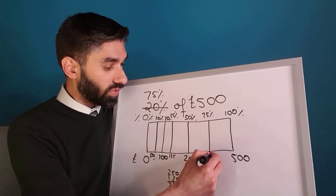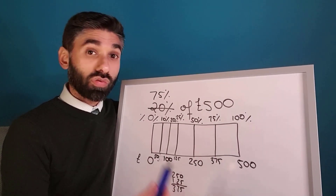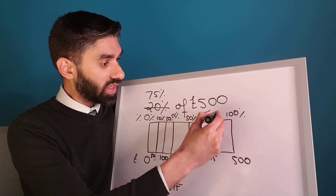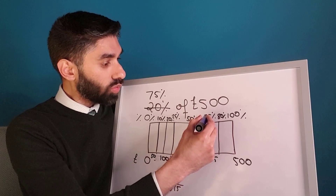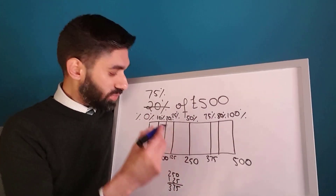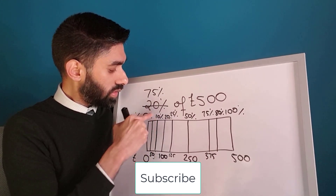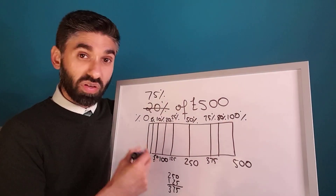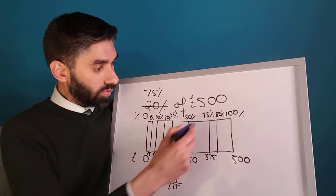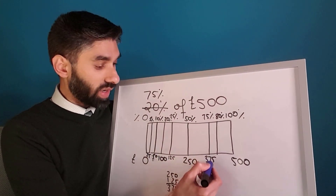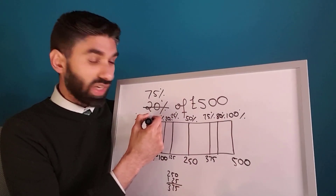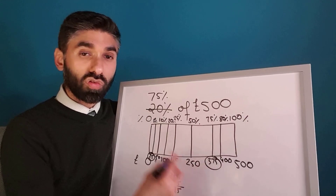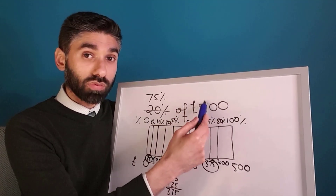What if we want to find 80%? We already know 75% = £375. We just need 5% more. Half of 10% is 5%, and half of £50 is £25. So 5% = £25. Adding 75% and 5% gives us 80%, and £375 + £25 = £400. So using one method you can find so many different percentages of a single amount.